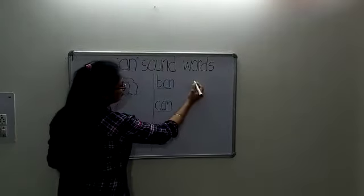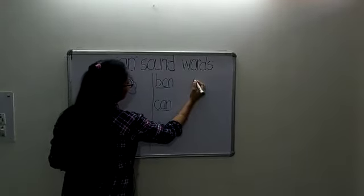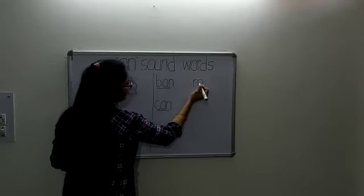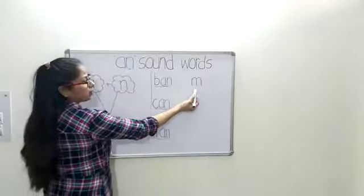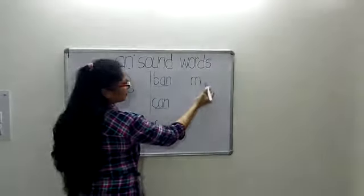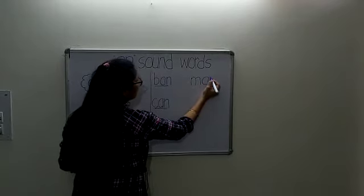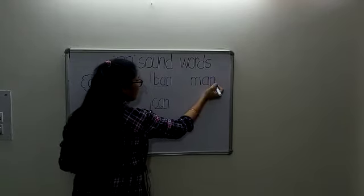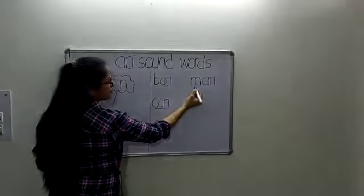The next letter is M. As we know, the phonetic sound of M is M. When we add the sound of AN into the phonetic sound of M, it becomes M and AN — it becomes MAN.